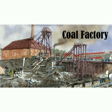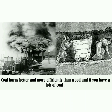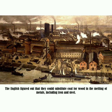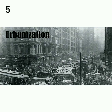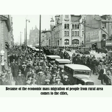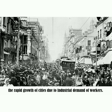Fourth, the coal factory. Coal burns better and more efficiently than wood. The English figured out that they could substitute coal for wood in the smelting of metal, including iron and steel. Fifth, urbanization — because of economic growth, there was mass migration of people from rural areas to cities. The rapid growth of cities was driven by the industrial demand for workers.